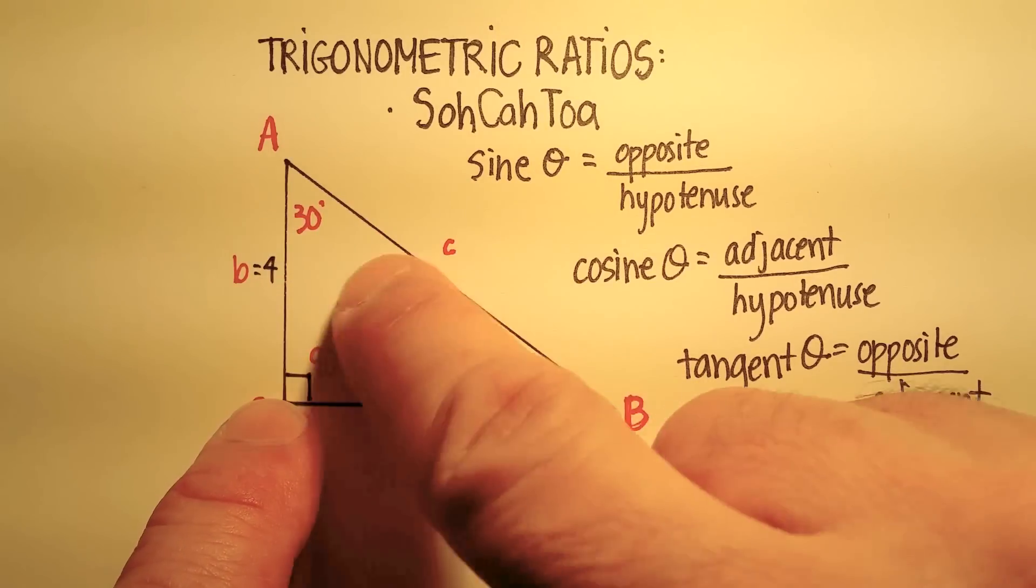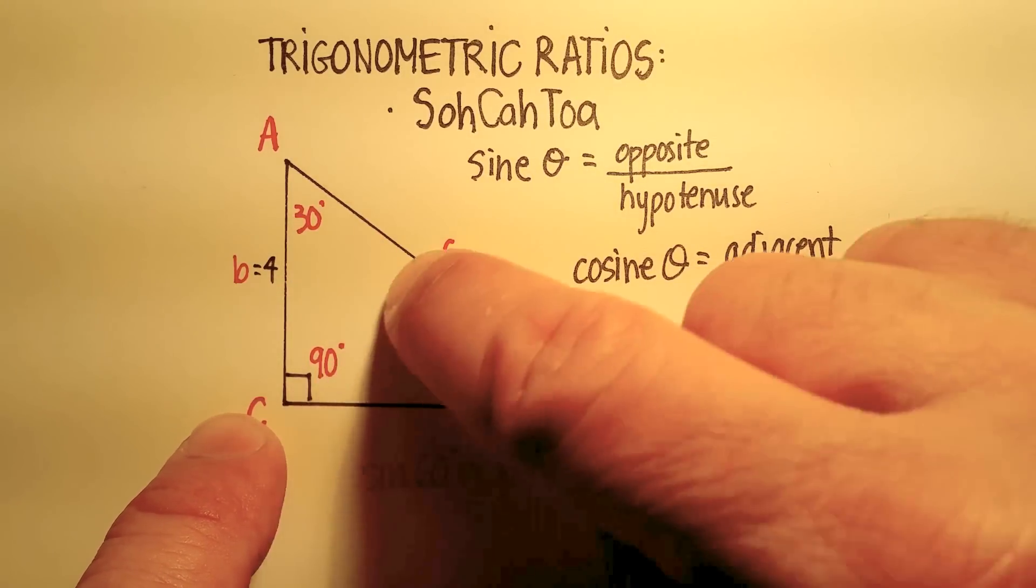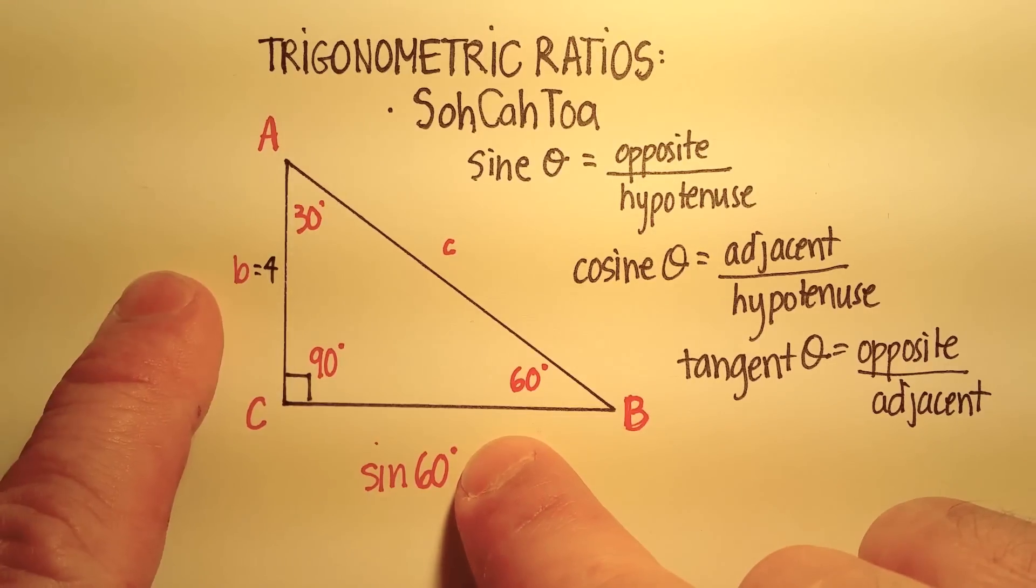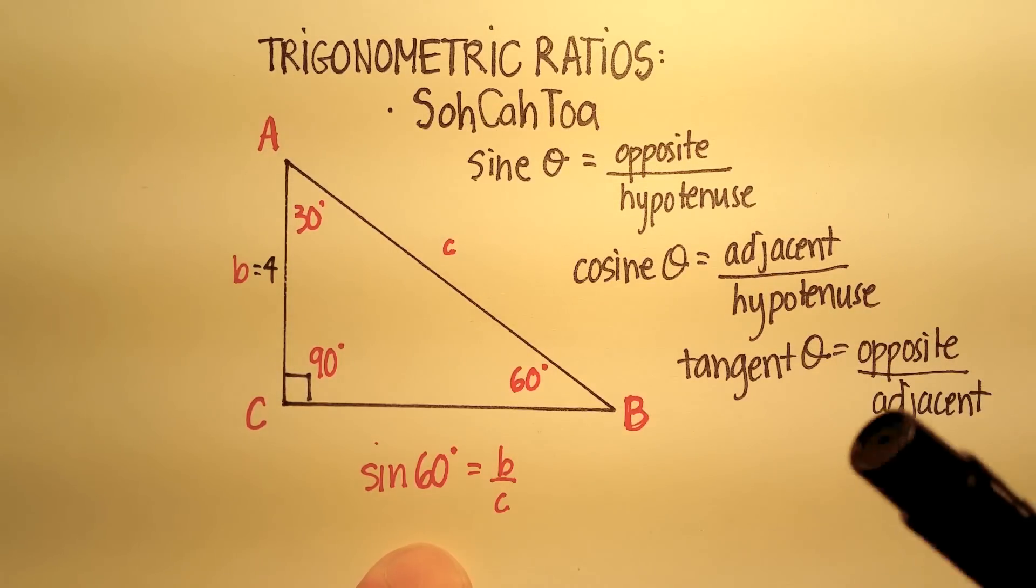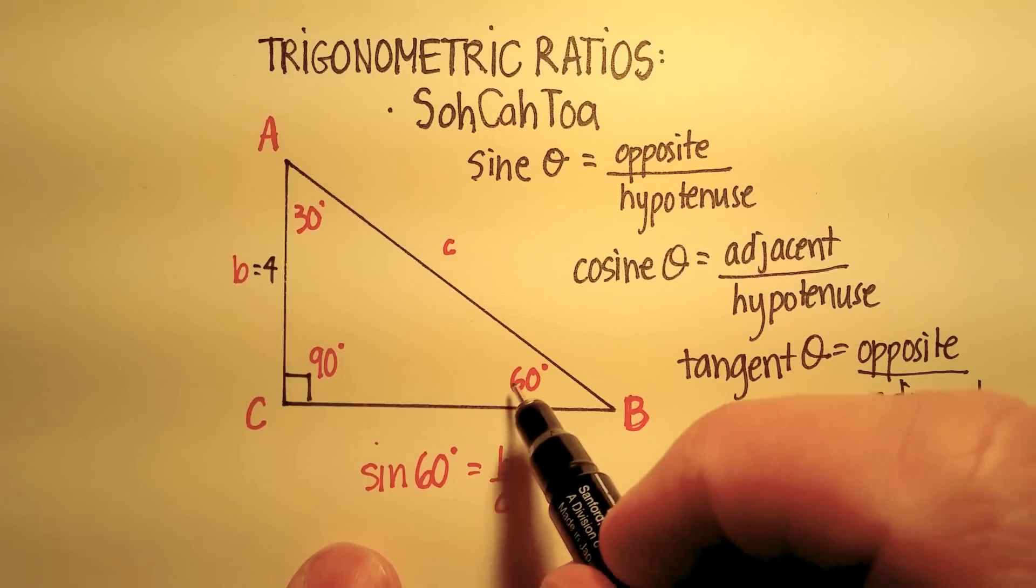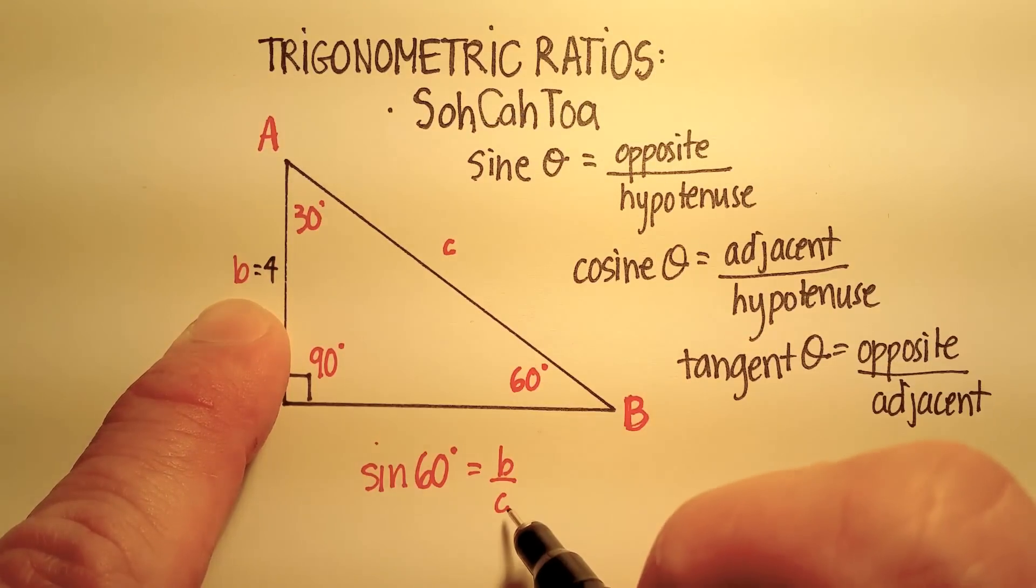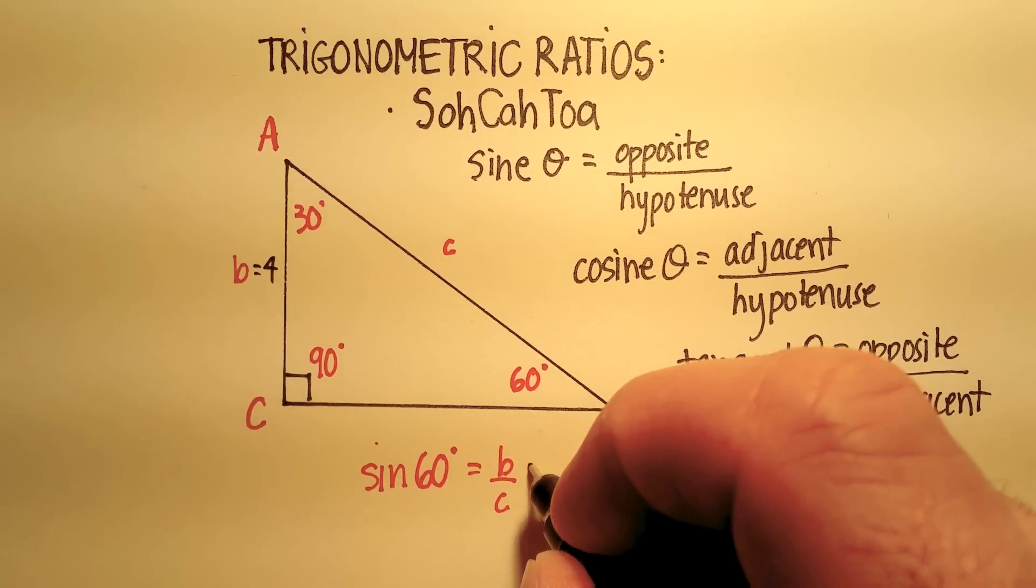And let's say we didn't know anything else other than just the angles. We didn't know this length, and we didn't know this length. We can't use the Pythagorean theorem here, so let's see if we can use a trig ratio. So we know that the sine of 60 degrees would be equal to 4 over c. So let's fill that in.